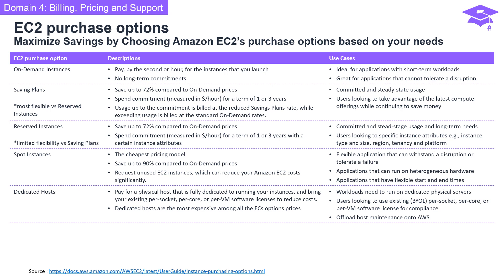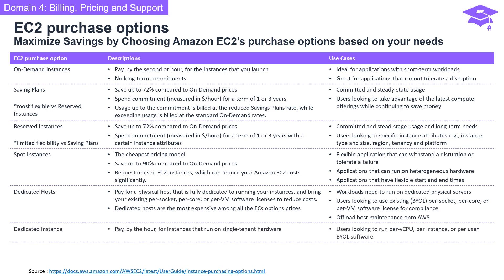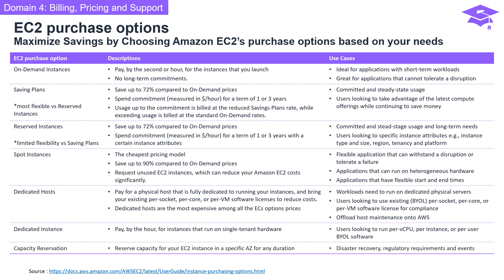Now let's talk about dedicated hosts: pay for a physical host dedicated to running your instances. It's the most expensive option but allows you to bring your existing licenses and offload host maintenance to AWS — perfect for workloads that need dedicated physical servers. Dedicated instances are next: pay by the hour for instances running on single-tenant hardware, great for per-CPU, per-instance, or per-user file software. Lastly, capacity reservation lets you reserve capacity for your EC2 instance in a specific availability zone for any duration, ideal for disaster recovery, meeting regulatory requirements, and specific events.